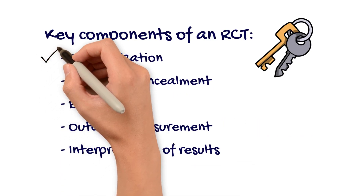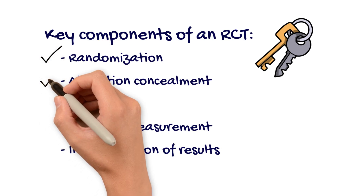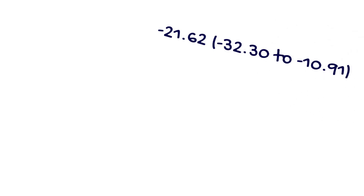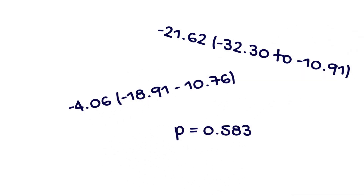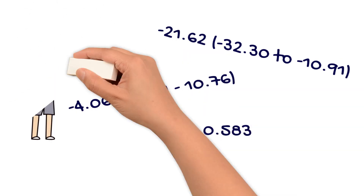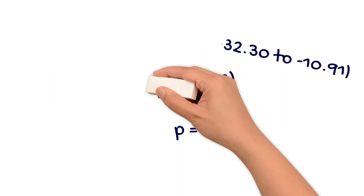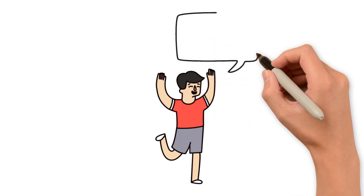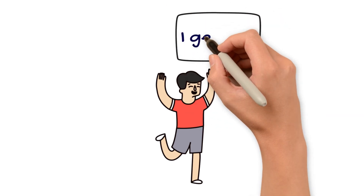If you have watched some of our other videos, you have learned a lot about the key components of a randomized controlled trial. You may be thinking, that's great, but what about the results? Sometimes it's hard to make sense of the numbers and use them in real life. In this two-part video series, we're going to take away some of the complexities of statistics so you can make sense of all those numbers.